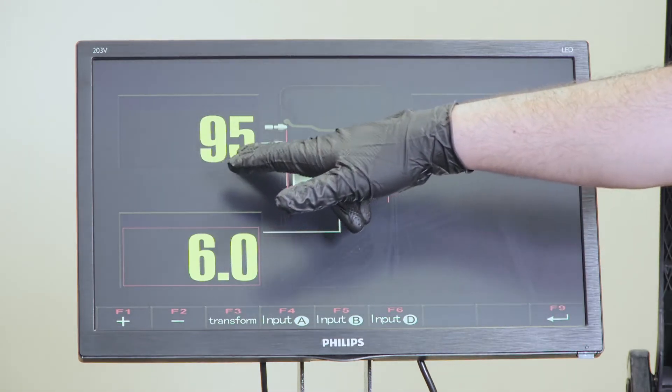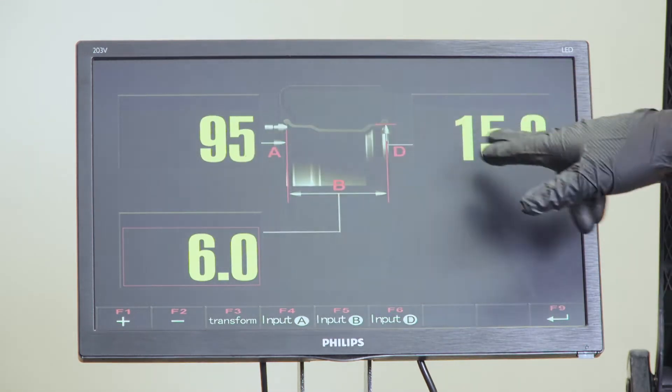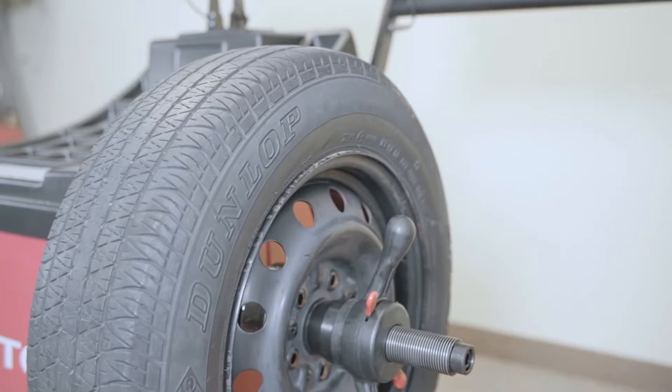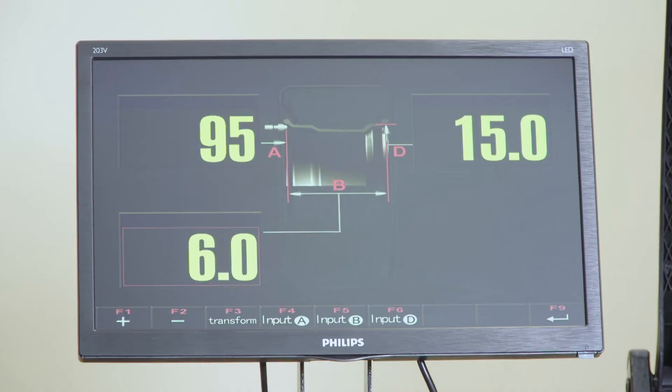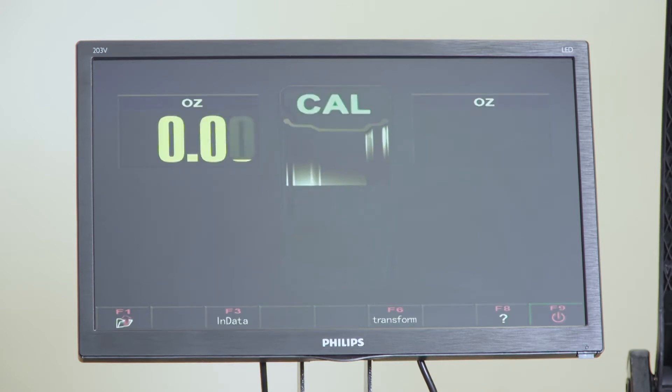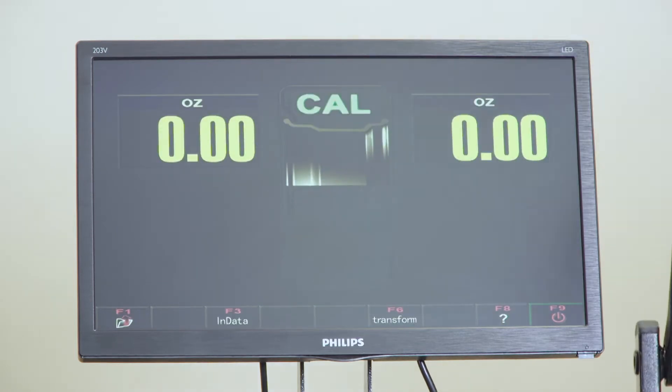That gives us the distance and the diameter. Then we'll take the width ruler and press OK. And spin the tire.